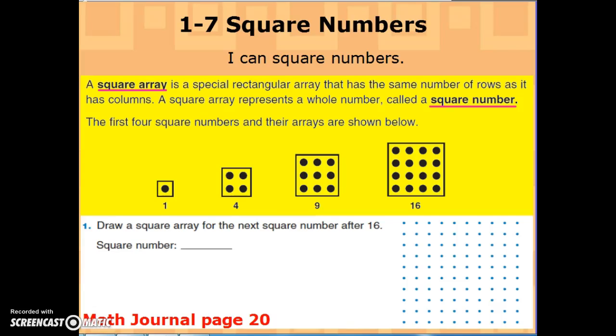Fifth graders, today we are going to do lesson 1-7, Square Numbers. Your objective is: I can square numbers. A square array is a special rectangular array that has the same number of rows as it has columns.